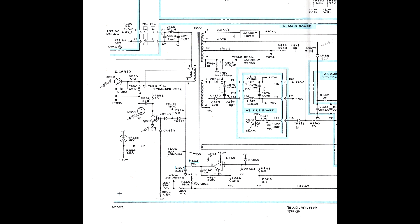This fuse provides plus 33 volts to the CRT high voltage section, which also provides plus and minus 70 volts for horizontal deflection and Z axis.